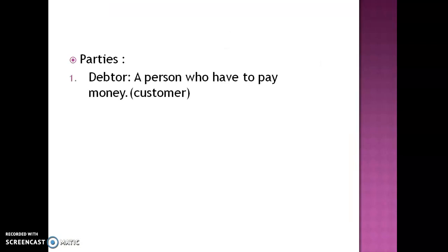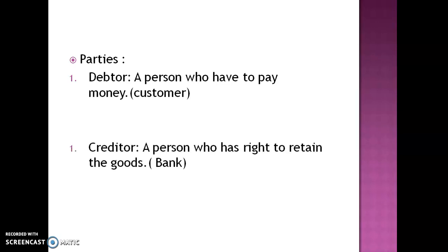The parties of lien are: first, the debtor — a person who has to pay money; the customer who has to repay the loan becomes the debtor. Second, the creditor — a person who has the right to retain the goods, that means the bank. In our example, the bank has the right to retain that car until it receives repayment, so the bank becomes the creditor. The two parties are debtor and creditor.